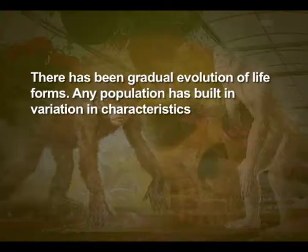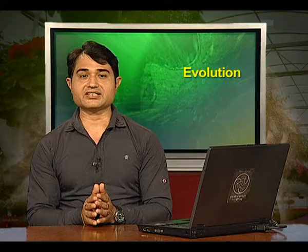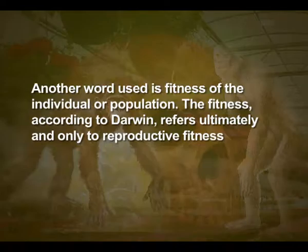Any population has built-in variation in characteristics. Those characteristics which enable some to survive better in natural conditions — that is climate, food, physical factors, etc. — would allow them to out-breed others that are less endowed to survive under such natural conditions. Another term used is fitness of the individual or population. Fitness, according to Darwin, refers ultimately and only to reproductive fitness.